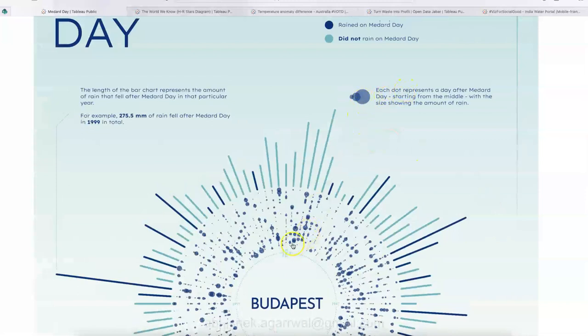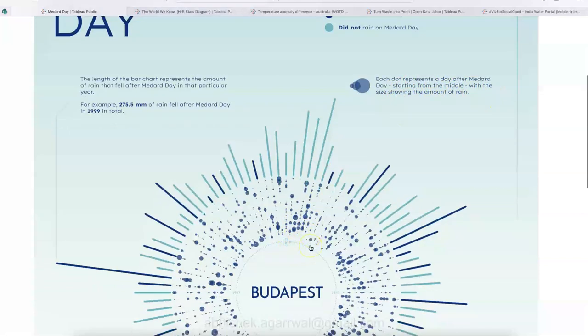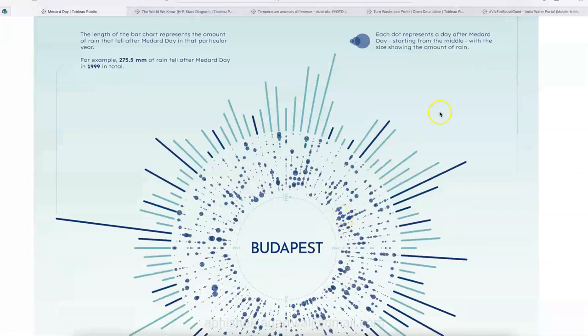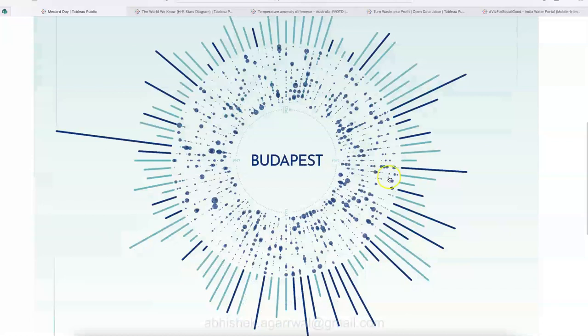Also, over here, each dot represent a day after Medard Day, starting from the middle with the size showing the amount of rain. So basically higher the dot, that means higher the amount of rain.